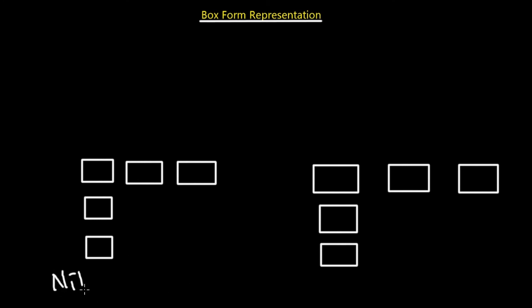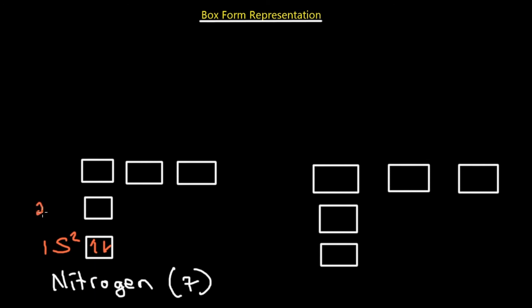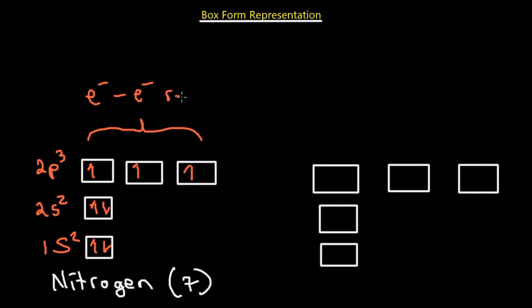Let's look at nitrogen in box form notation. Nitrogen has seven electrons. The first box represents 1s², with one electron spinning up and one spinning down — fully filled. Then 2s² — two electrons, one clockwise and one counterclockwise. For 2p³, the three electrons spread out across the three P sub shell boxes, one per box, all spinning in the same direction, due to electron-to-electron repulsion.